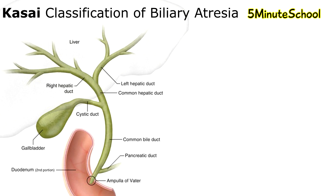It eventually leads to jaundice, liver cirrhosis, and liver failure. The surgical treatment for it is either the Kasai procedure, where we stitch part of the small intestine onto the liver to help with drainage, or in some cases a liver transplant is needed.